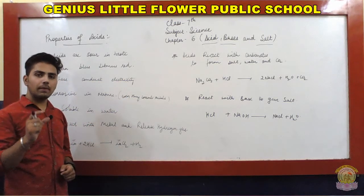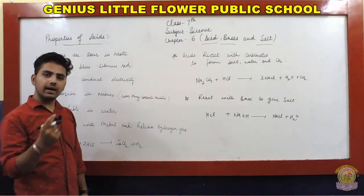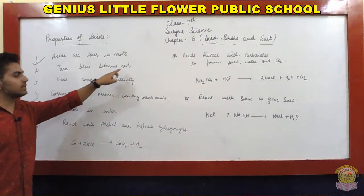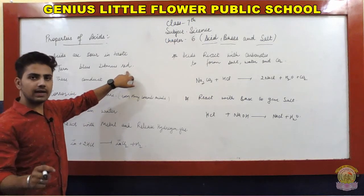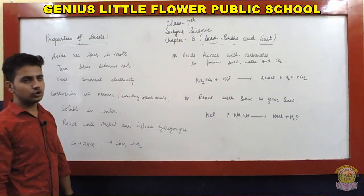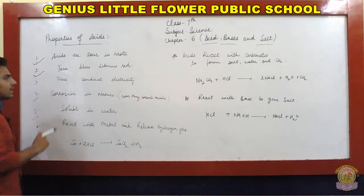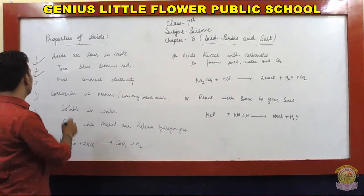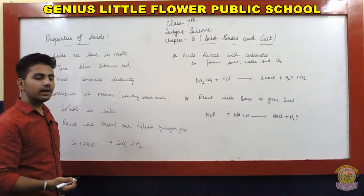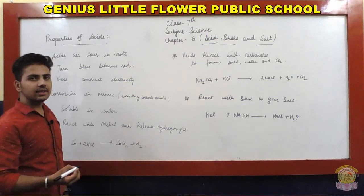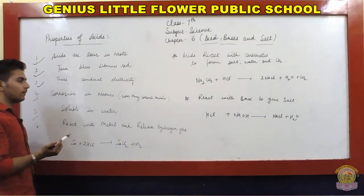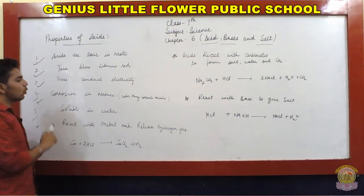The second property is acids turn blue litmus red. Litmus paper comes in two types - red litmus and blue litmus. When you test an acid with blue litmus, the blue litmus will change to red. The third property is acids conduct electricity - they allow electricity to pass through them.